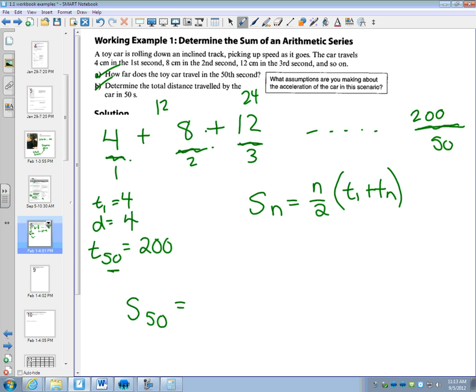So I want to know the sum of the first 50 terms. I go n, so 50 is the number of terms, n over 2. Term 1 is going to be, we said, 4, plus the last term, the 50th term, term n, term 50, we said was 200.